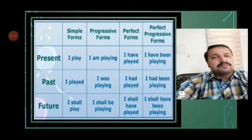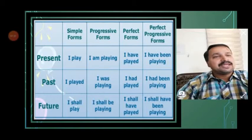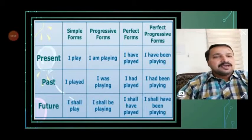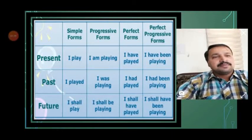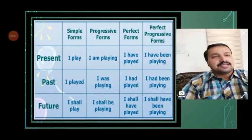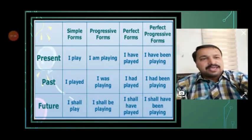In simple past tense: I played, you played, we played, they played, she played, he played — no change happens with the verb form. In past progressive tense: I was playing, she was playing, he was playing, Raju was playing. For plural subjects: they were playing, you were playing, we were playing.